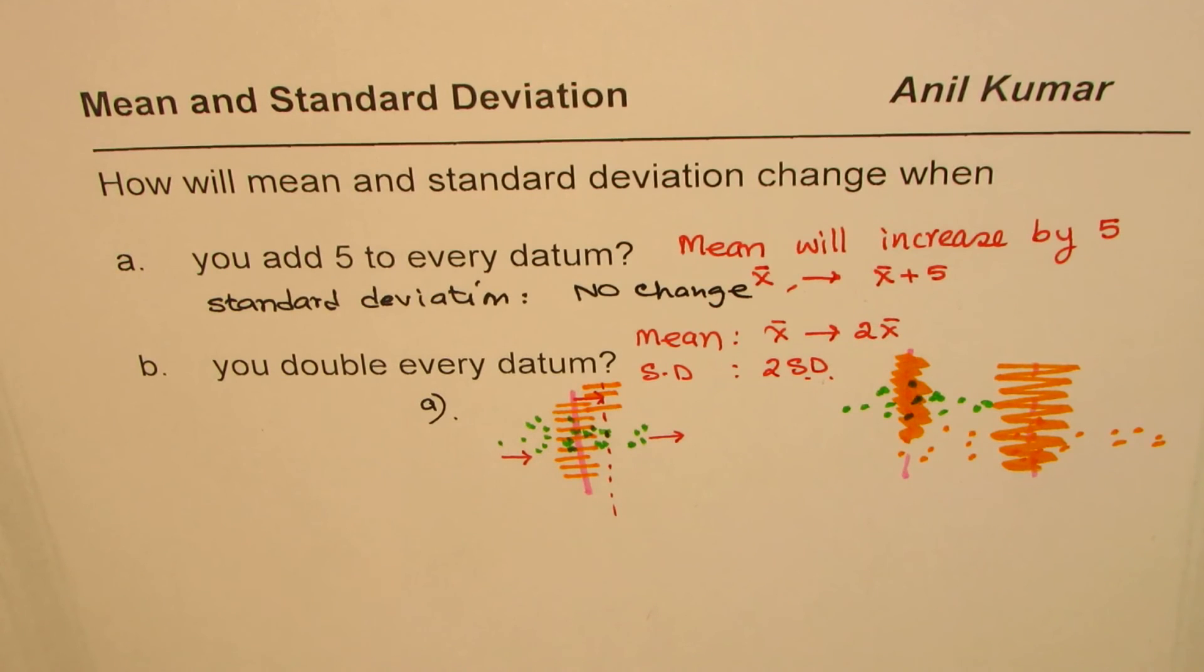So this standard deviation will also double. Now it really doesn't matter whether you are taking population or a sample - in both cases the standard deviation is also going to double. I hope that is absolutely clear. I'm Anil Kumar. You can share and subscribe to my videos. Thank you and all the best.